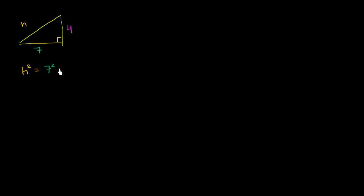Let's just focus on the right triangles for now. Let's say that I have a triangle where this length down here is 7, and this side up here is 4. Let's figure out what the hypotenuse is going to be. We'll call it h. We know that h squared is equal to 7 squared plus 4 squared, from the Pythagorean theorem — the hypotenuse squared equals the sum of the squares of the other two sides. So h squared equals 49 plus 16.